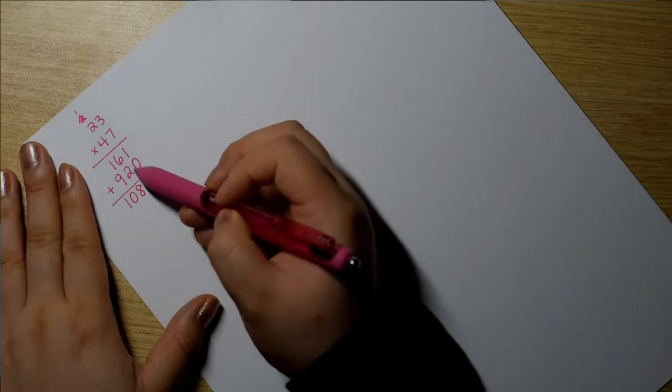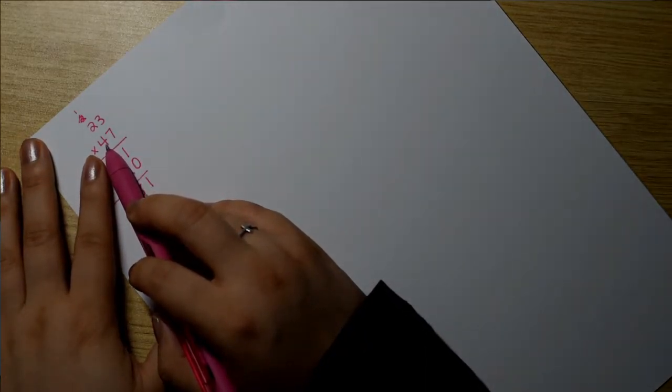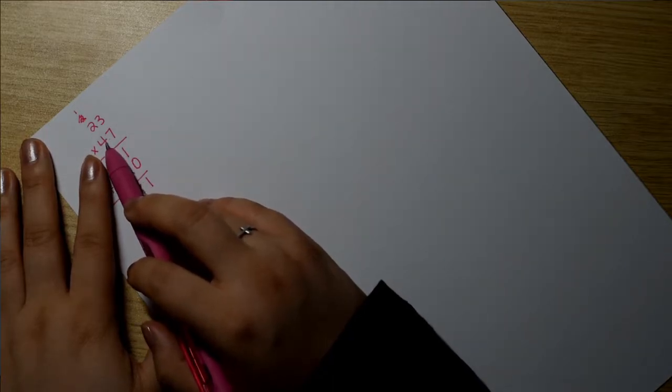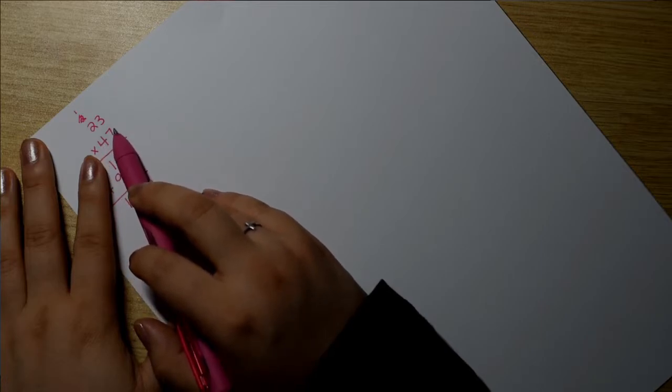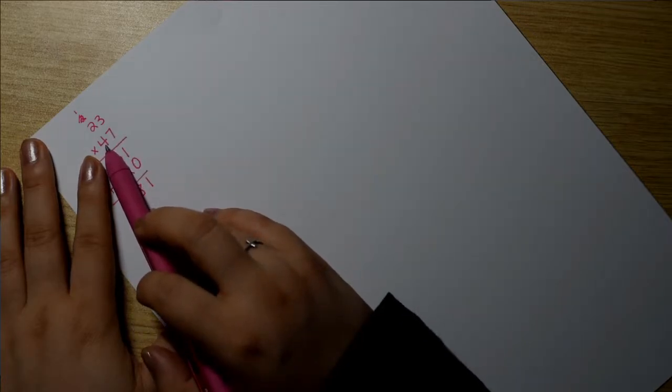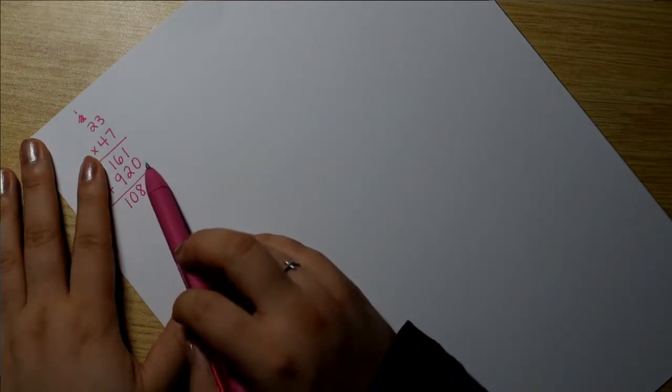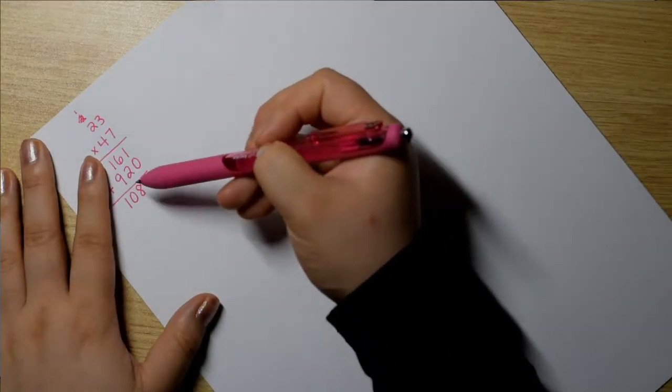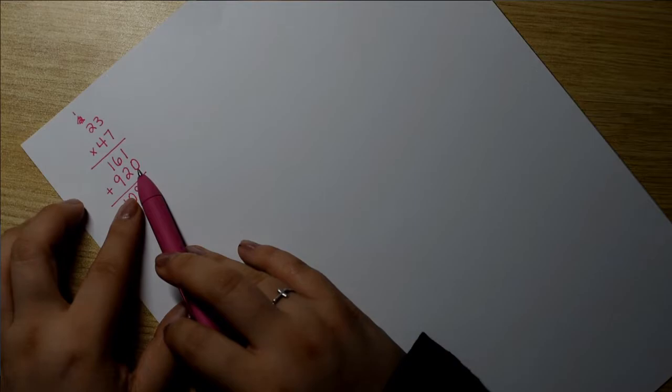And the reason that we put that little placeholder 0 is because this 4 is not actually just 4 ones. It's actually 40. As in 47 is 4 tens and 7 ones. So really, we're secretly doing 40 times 3, which would be 120. So we're kind of just doing it one layer at a time. And so we put a 0.